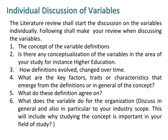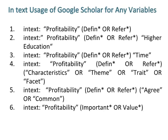Number 7 is what does the variable do for the organization. Discuss in general and also in particular to your industry scope. This will include why studying the concept is important in your field of study. This is for in-text usage of Google Scholar for any variables.